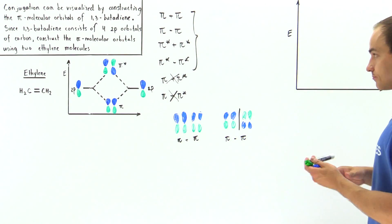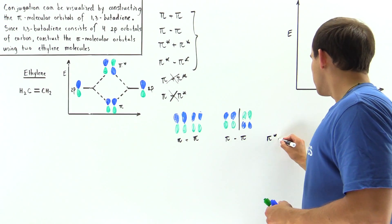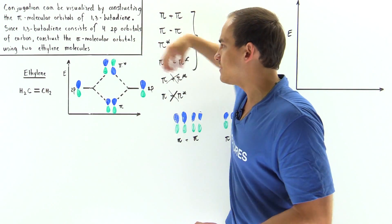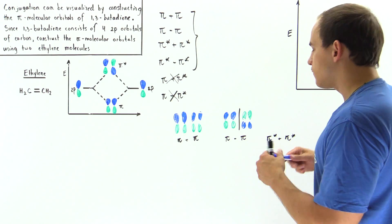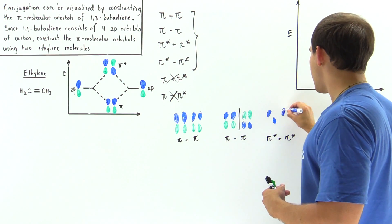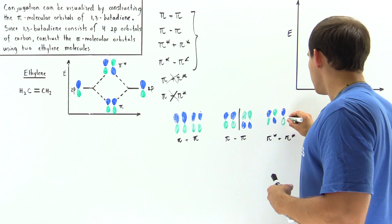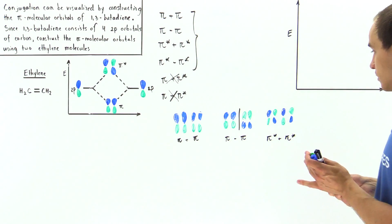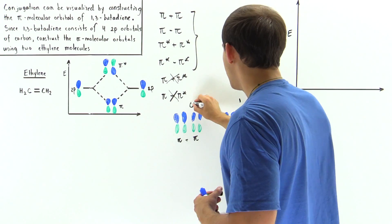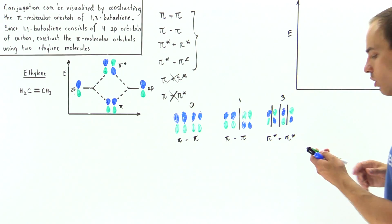Moving on to pi star plus pi star. The pi star orbital has blue on top of the first lobe and blue on the bottom of the second lobe, with green on the remaining lobes. Combining pi star with itself produces a molecular orbital where each section contains a node. This combination results in three nodes total, making it very high in energy.